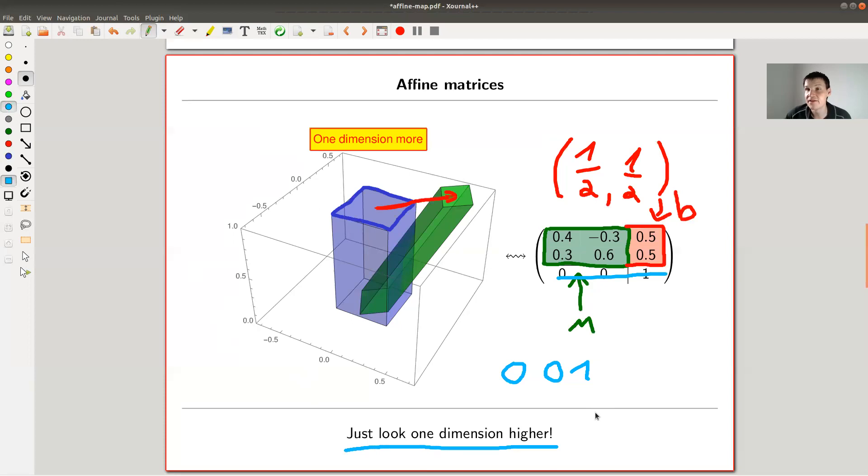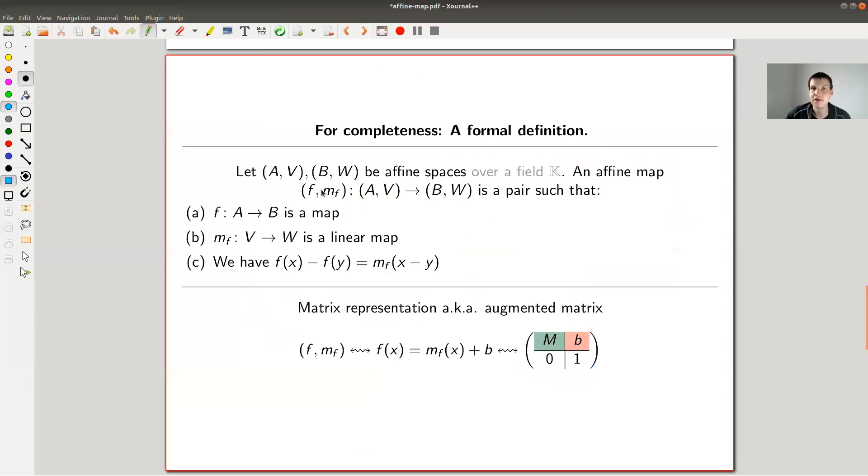So affine matrices are basically matrices in one dimension more. So in this case, my affine space would be of dimension two, but still I would have a matrix of size three by three. And that's exactly the formal definition you would do.